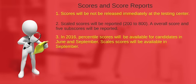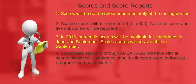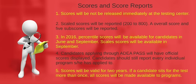In September, the scaled candidate results for all 2016 candidates will be available. Applicants to ADEA Pass will have official scores displayed as long as they have submitted scores to at least one ADEA Pass participating program. ADAT scores will be valid for two years.